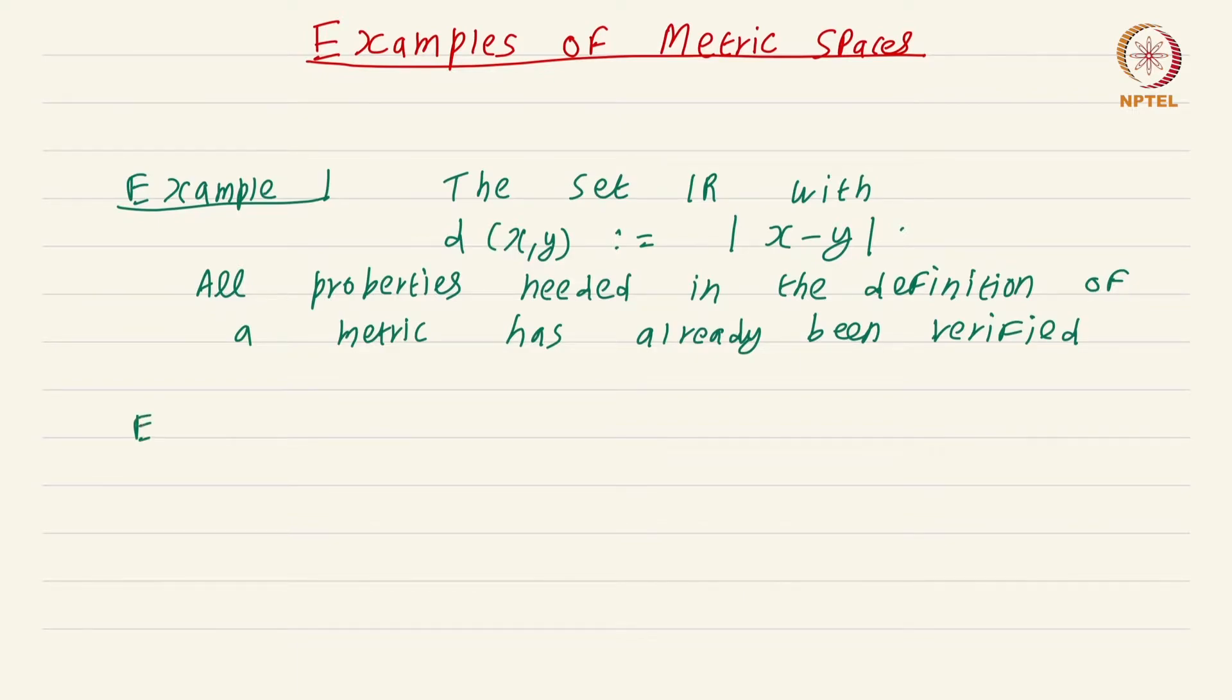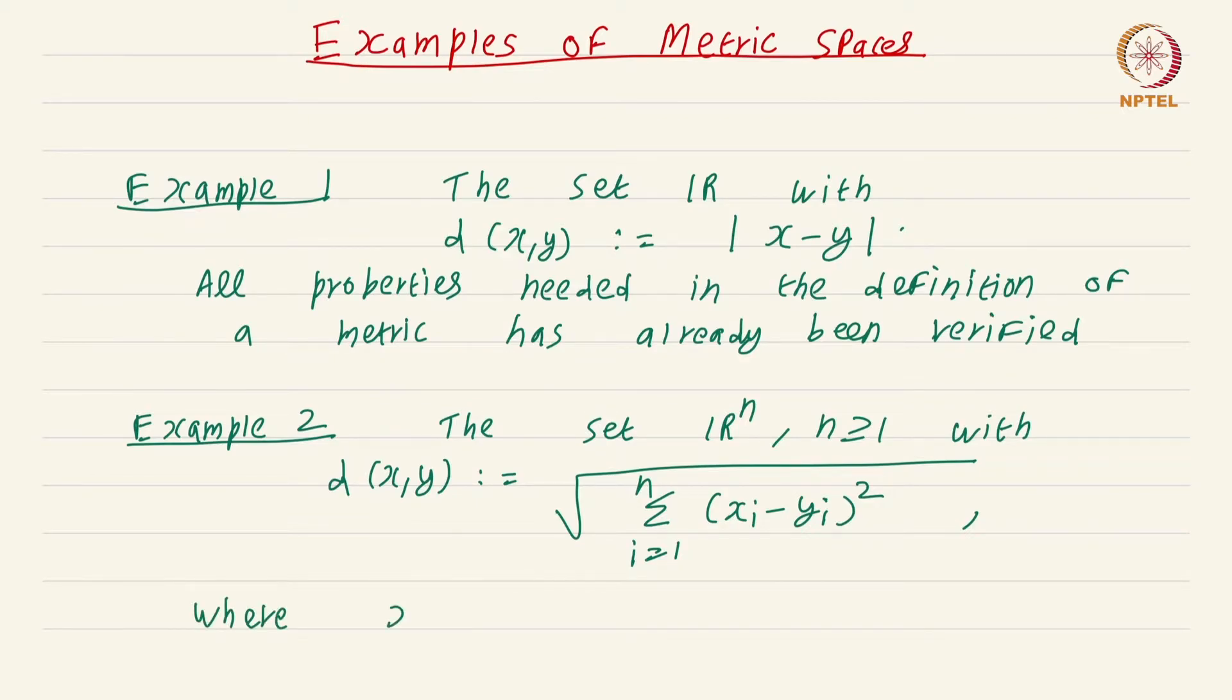Example 2 is one of the most important examples and also the most pertinent one when it comes to this course on multivariable real analysis. This is the set R^n, n ≥ 1, with d(x,y) defined to be the usual distance between two points in R^n, which is nothing but given by the formula: under root summation i equals 1 to n (x_i - y_i) the whole square, where we have written the point x as (x_1, ..., x_n) and the point y as (y_1, ..., y_n).